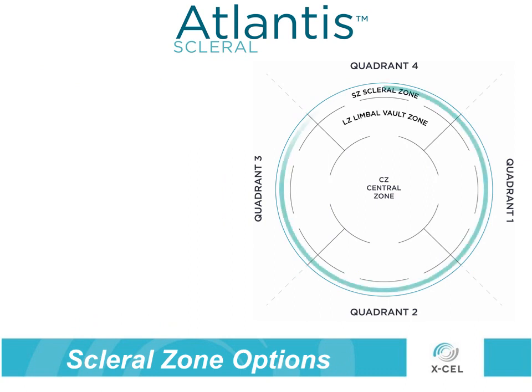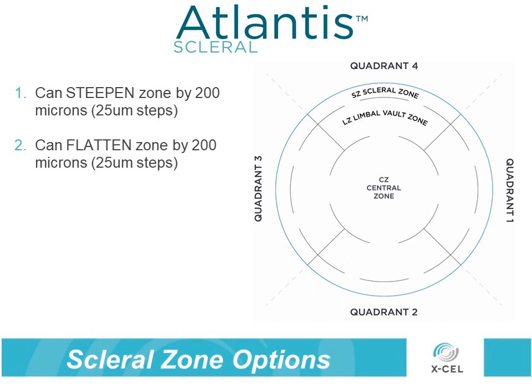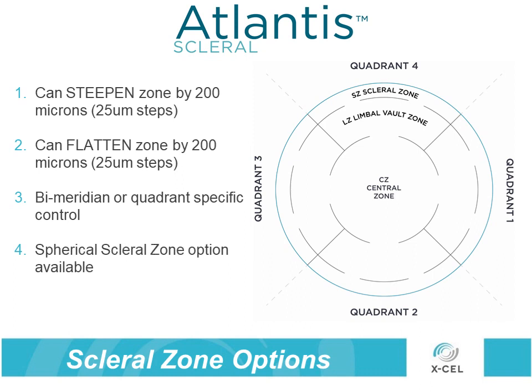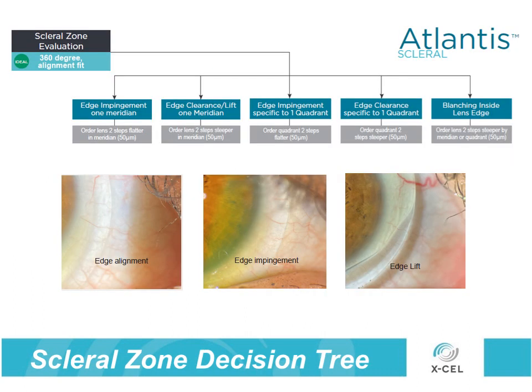The toricity of the scleral zone can be customized in a number of ways. Each meridian can be steepened or flattened 200 microns in either direction in 25 micron steps. Each quadrant can also be manipulated. While data shows that the vast majority of scleras are not spherical, toric haptics may not be required in every case and the edge can be specified as spherical if needed. A spherical haptic can be steepened or flattened as a whole. This decision tree, included in your Atlantis Scleral fitting set, can aid practitioners in deciding when to adjust the steep meridian, flat meridian, or a specific quadrant in order to properly align the haptic. Notating the axis of the steep meridian and the position of the quadrants is extremely helpful in relaying information to the Excel consultant.